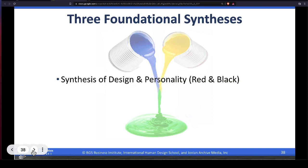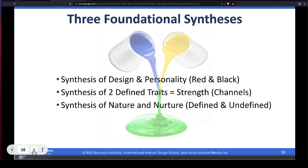Synthesis. There are three foundational syntheses. The design and the personality. We call that the red and the black to be very clear and plain. To look at the chart, you see red and black. That's the synthesis of number one. Number two is you have two defined traits on each side of a strength. In human design, we call that gates and channels. Here, I want you to use, if you can, please try to remember. Get into the habit. Traits. It's really easy because it rhymes with gates. Traits and gates. We've got traits. And then, when you look over at channels, think of it as a strength. Synthesis of nature and nurture. Where you're defined, you're nature. And where you're undefined, you're nurture. Those are the three foundational syntheses I want you to keep in mind as we move forward. Really important.